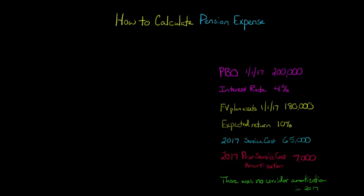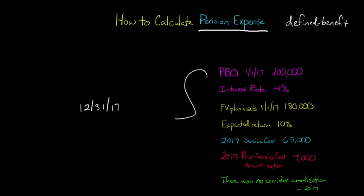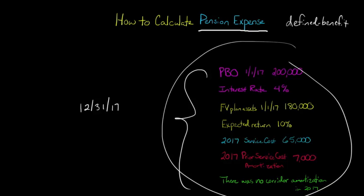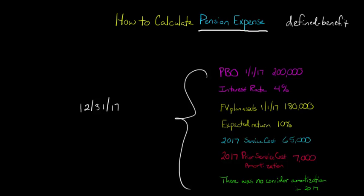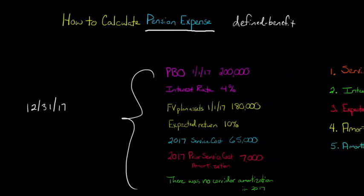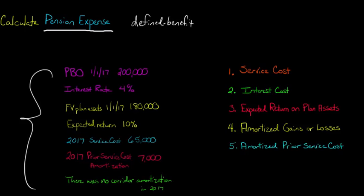In this video, we're going to talk about how to calculate pension expense for a defined benefit pension plan. I've put together an example for the year 2017. We're putting together the income statement as of December 31st, 2017, and we're going to use the following data to create our pension expense amount. We'll need to compute the five components of pension expense, which we talked about in our previous video.